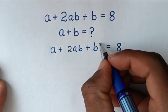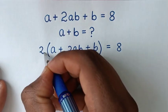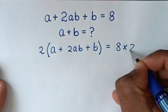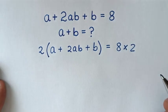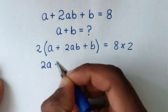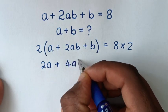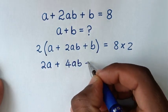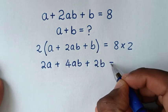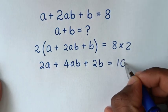In the first step, we will multiply by 2 on both sides. So 2 times a is 2a, plus 2 times 2ab is 4ab, plus 2 times b is 2b, is equal to 8 times 2, which is 16.